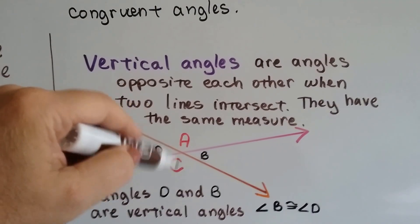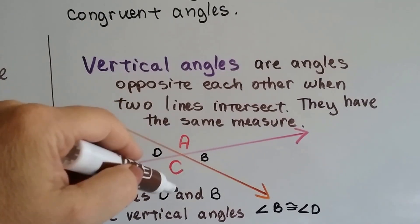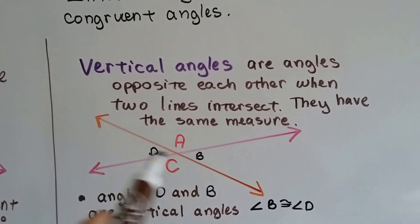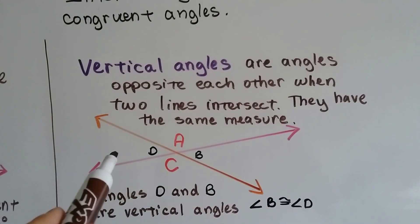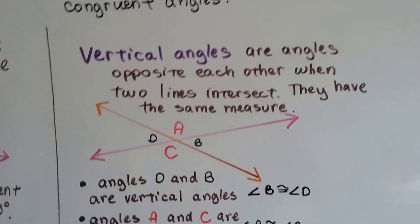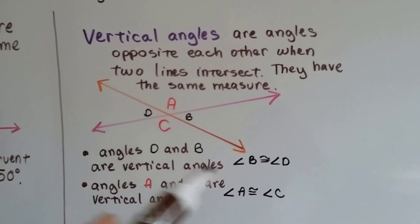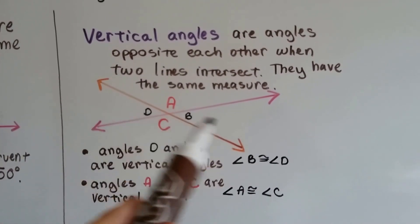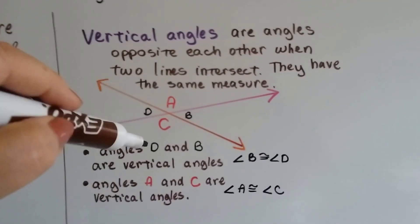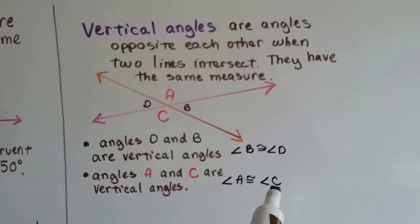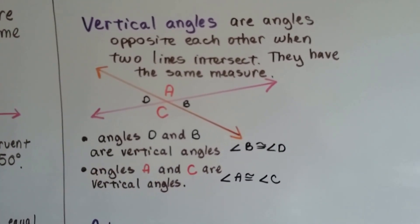Because A and C are across from each other, opposite each other, they're vertical angles, and they have the same measure. And because D and B are across from each other and opposite each other, they have the same measure. So, angles D and B are vertical angles, and they're congruent because they're vertical angles. And angles A and C are vertical angles, and they are congruent to each other because they're vertical angles.